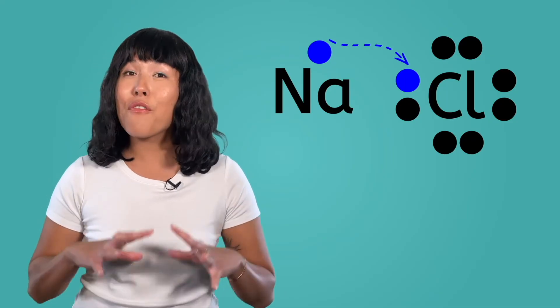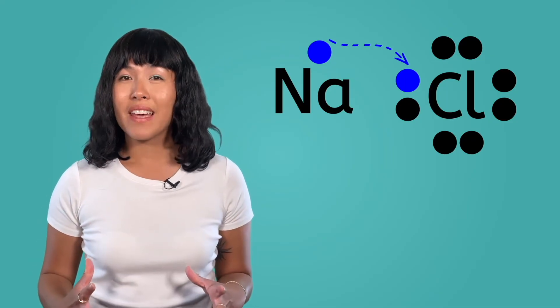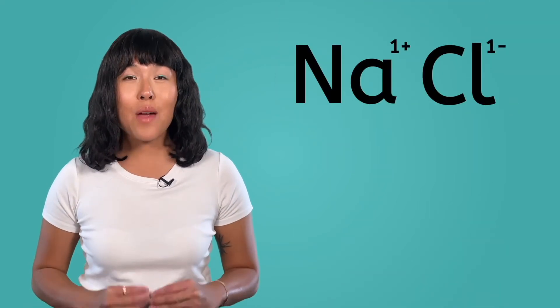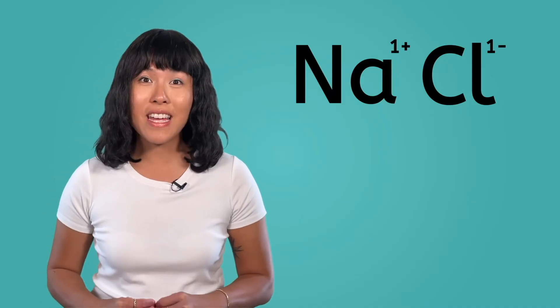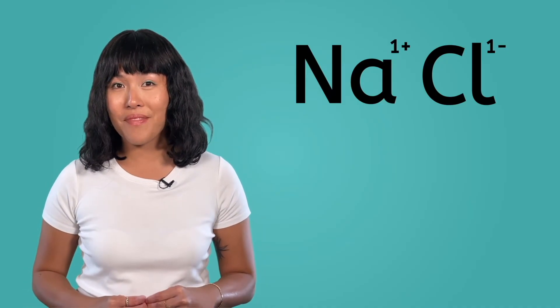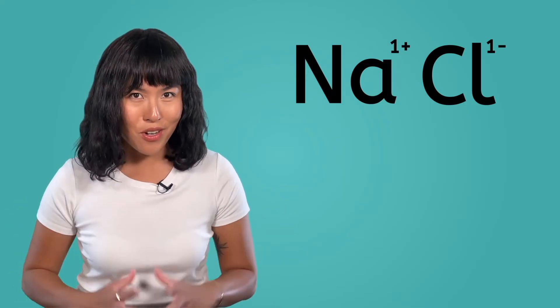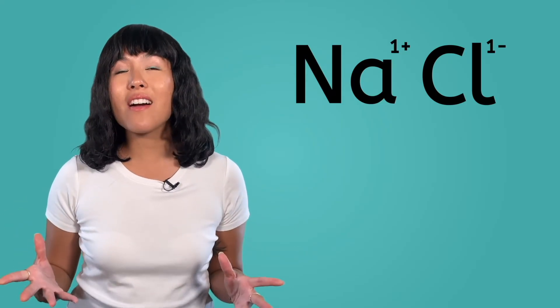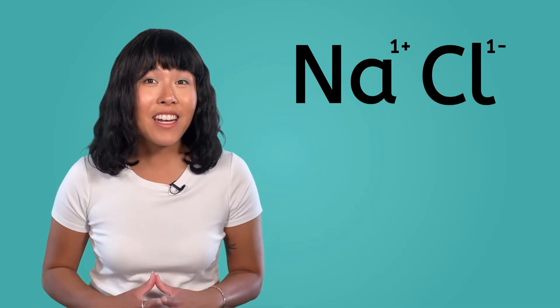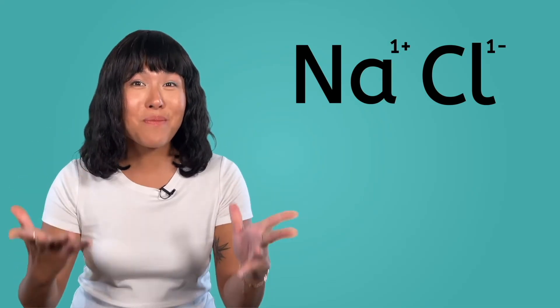Now, both atoms have a full valence shell. When sodium lost its electron, it became an ion with a positive one charge, and when chlorine gained an electron, it became an ion with a negative one charge. As we know, opposite charges attract, so the sodium ion and chlorine ion are attracted to one another, and that attraction is called an ionic bond.